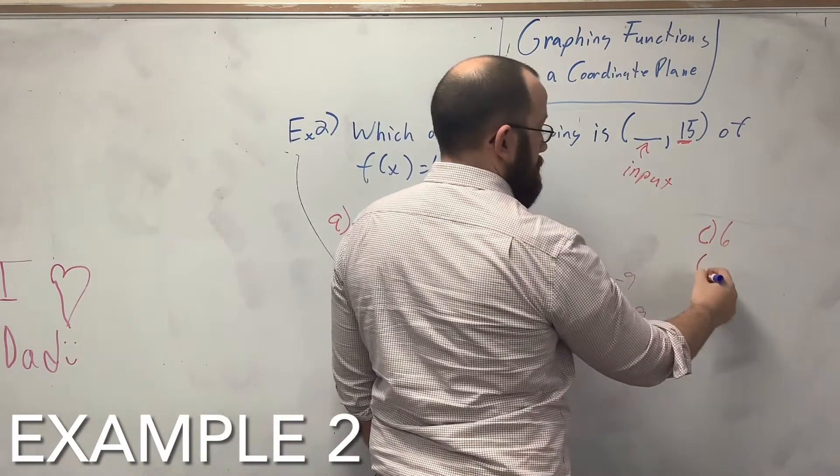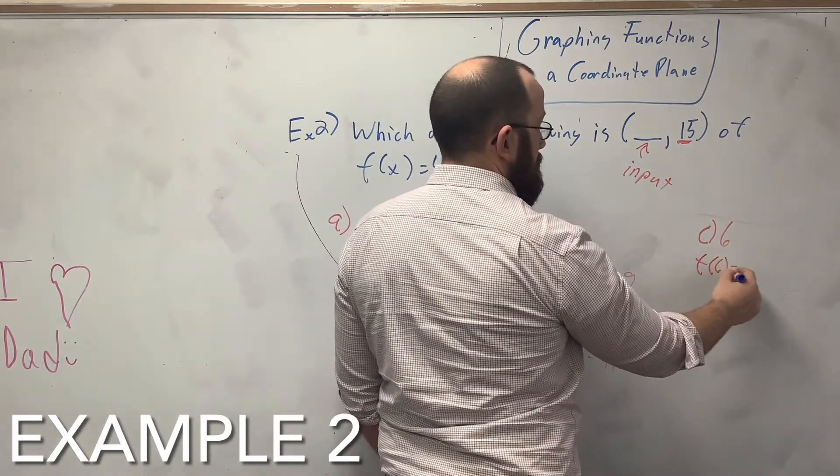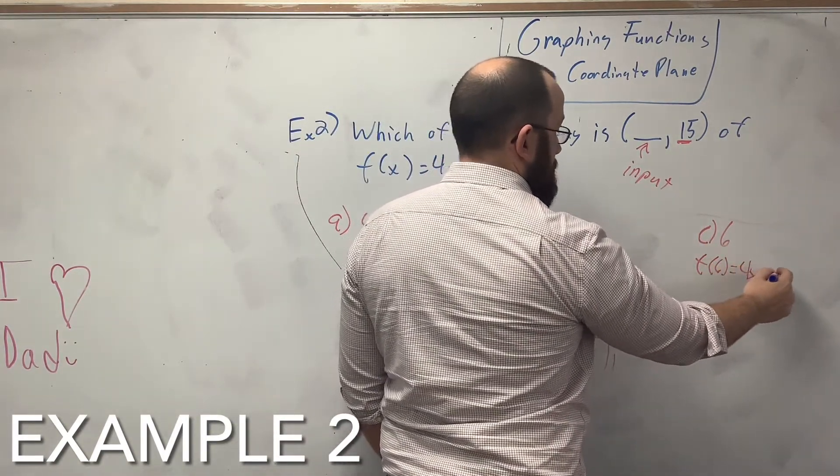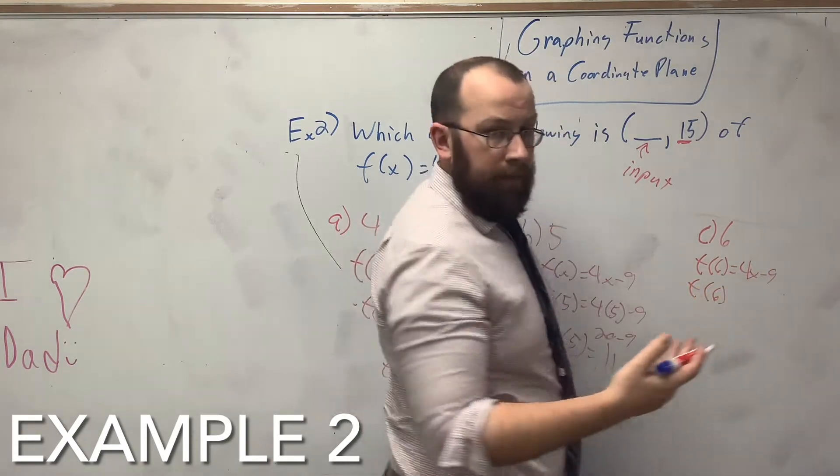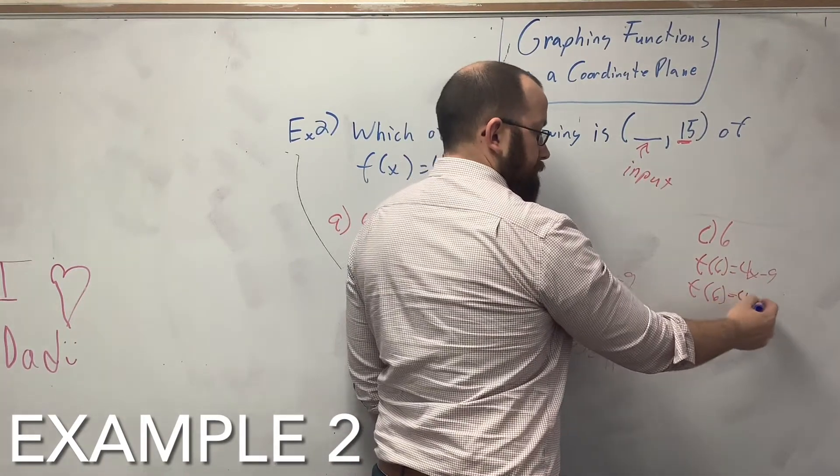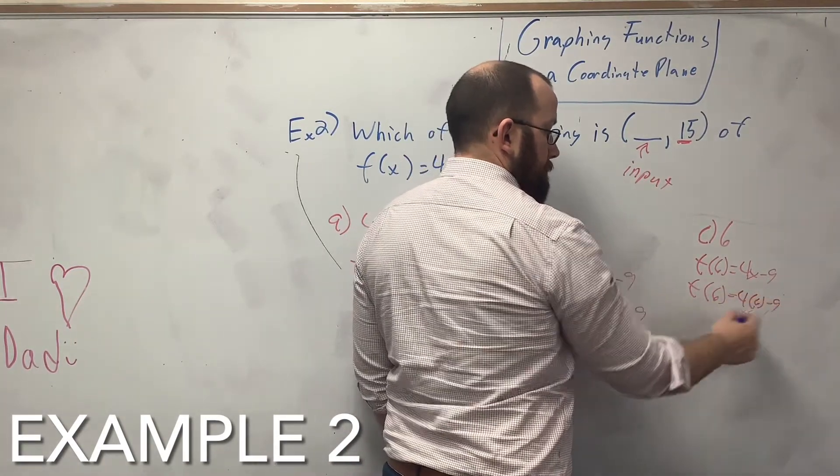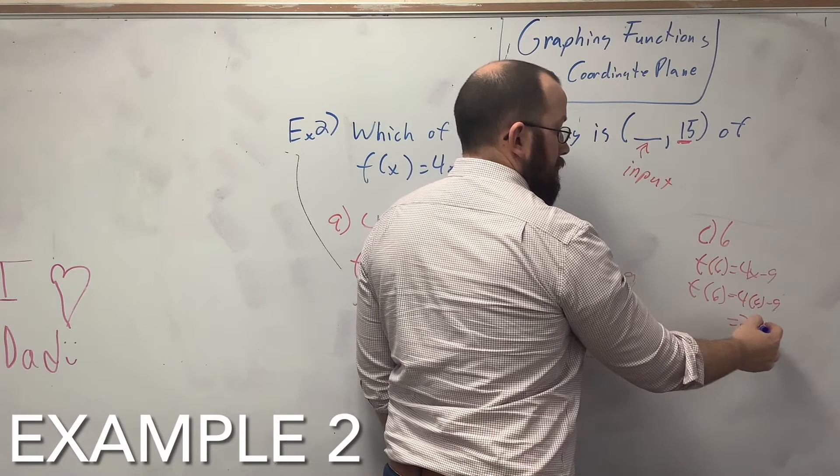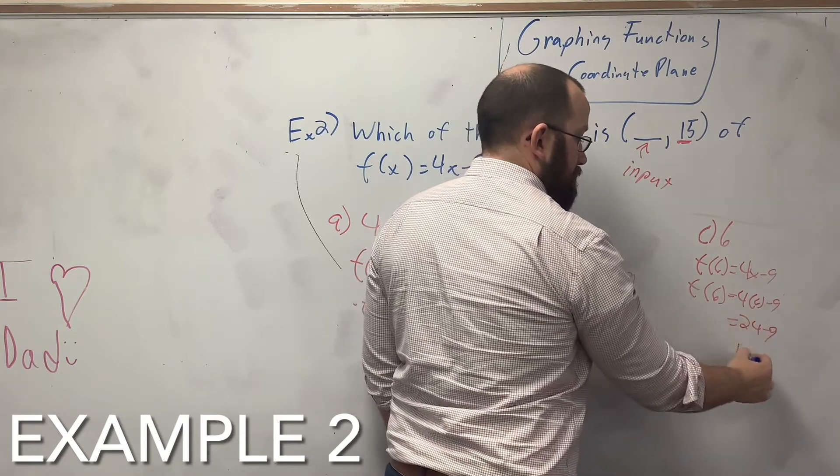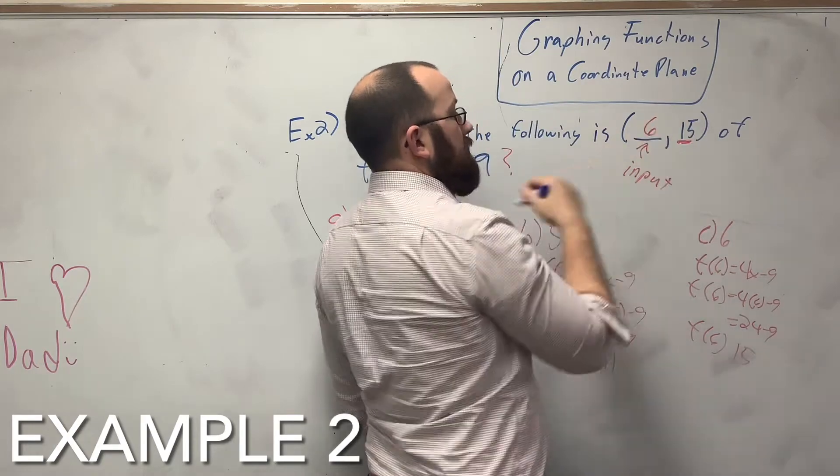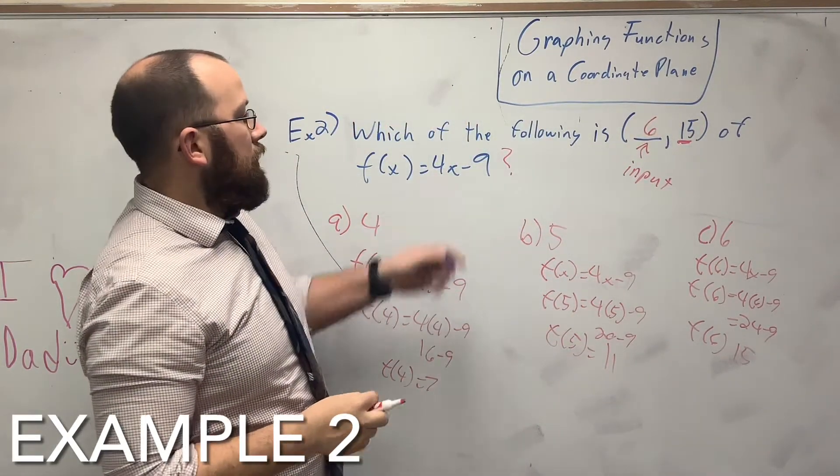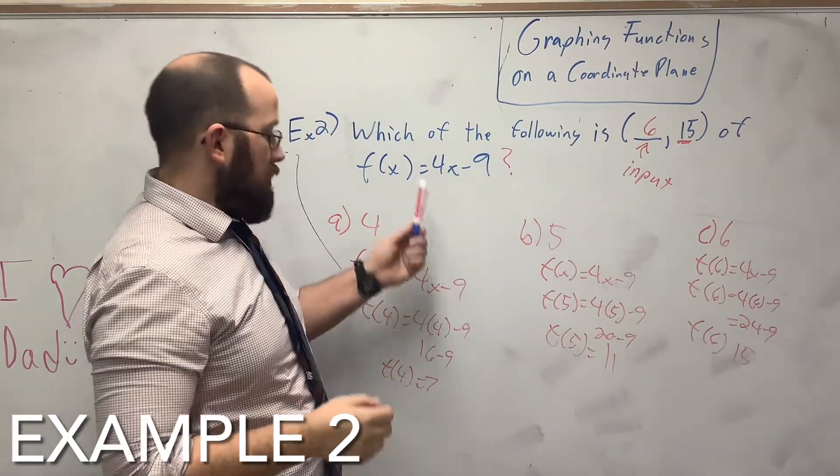So come over here to 6. So f of 6 equals 4x minus 9. So plug in x everywhere you see an x. So I get 24 minus 9, which is 15. So to complete this, it's 6. 6, 15 is the ordered pair that matches up with that function.